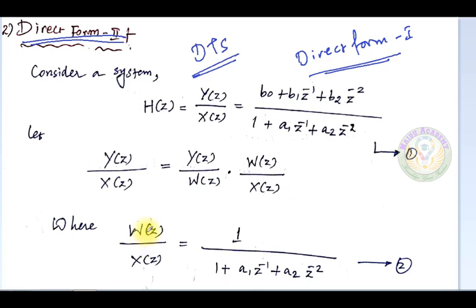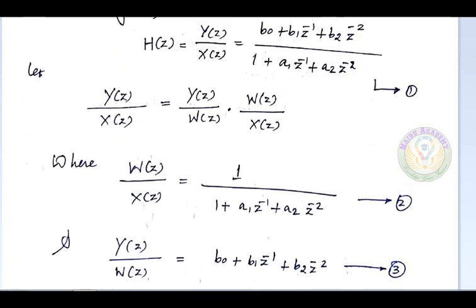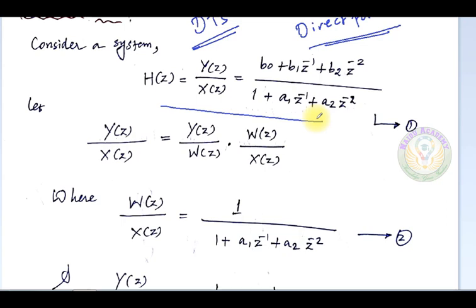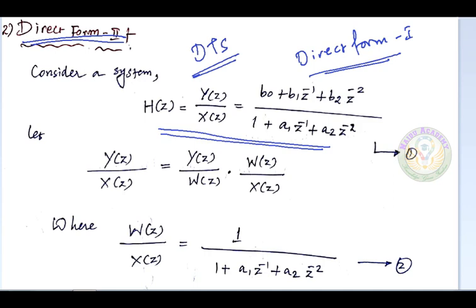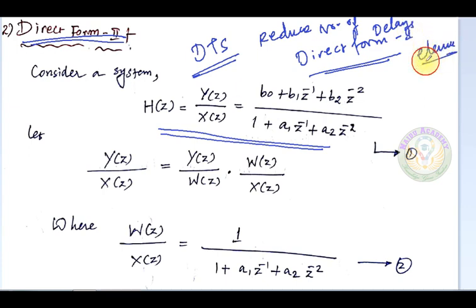We are using the same system as in Direct Form 1. The main purpose of going to Direct Form 2 is to reduce the number of delay elements. That is the only difference between Direct Form 1 and Direct Form 2 — we come to Direct Form 2 to reduce the number of delay elements.